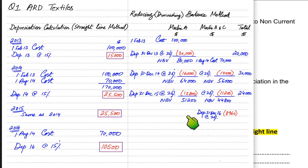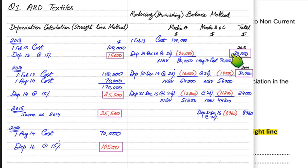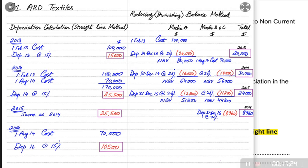Since Machine A is sold, whoever purchased it is now responsible for its depreciation. The total depreciation for 2016 is 8,960 for Machines B and C only. To summarise: in year one (2013), depreciation was 20,000 for Machine A only; in years two and three (2014–2015), all three machines were depreciated; in 2016, only Machines B and C remained. I hope the underlying concepts of straight line and reducing balance methods using the full year policy are now clear. More questions will be covered in later lessons.